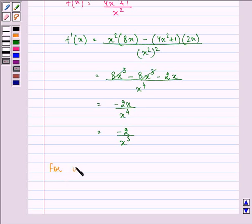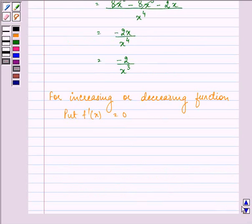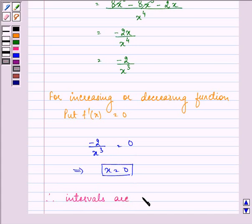For an increasing or decreasing function, we set f'(x) = 0. So -2/x³ = 0, which implies x = 0. Therefore, the intervals are (-∞, 0) and (0, ∞).